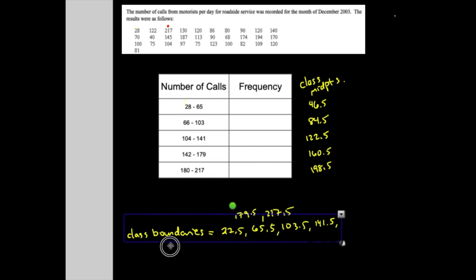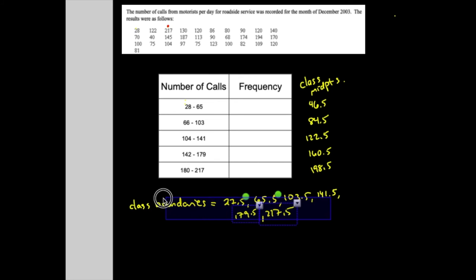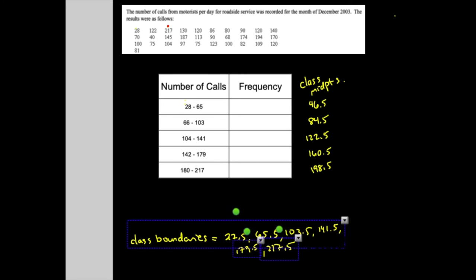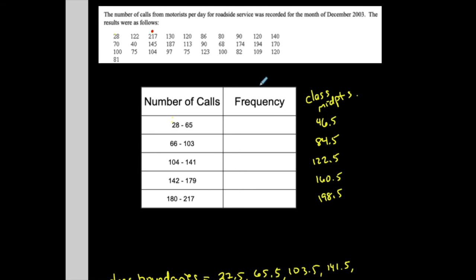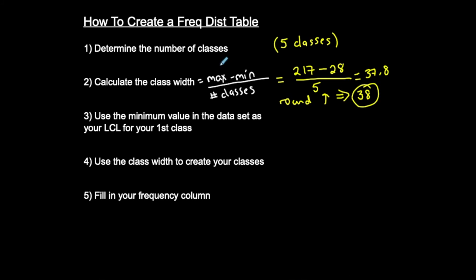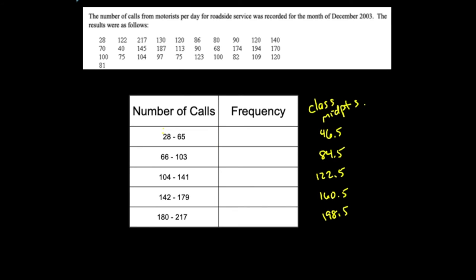Technically I wasn't asked to do all of that — it was just for practicing what the last video covered. What I really want to do is finish up this frequency table. Now I've got to fill in the frequency column. I'll use the class width to create the classes and fill in the frequency column. For the first class, I'm looking for all the numbers in the data set that are between 28 and 65 inclusive.